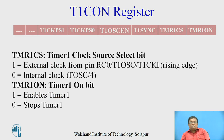The Timer 1 clock source select bit (T1CS) is used to select either external or internal clock. External clock should be selected when operating Timer 1 in counter mode; for timer mode, T1CS must be 0. When T1CS is set, the timer operates on external clock applied on port C pin RC0. In timer mode, T1CS must be reset to select the internal clock. The Timer 1 on bit enables or disables the timer: when it is 1, the timer runs; when reset, the timer stops.